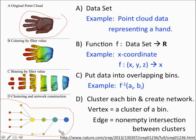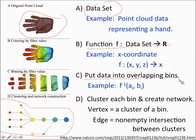The basic idea of the mapper software is: you have your data set, you then apply a filter function to put your data into overlapping bins, then you cluster each bin, and after clustering you create the network. One vertex represents a number of different data points. If there are data points in both your red vertex and your orange vertex, you join them with an edge, giving a much simpler representation. If you have questions, feel free to interrupt at any time or type them in the chat box.